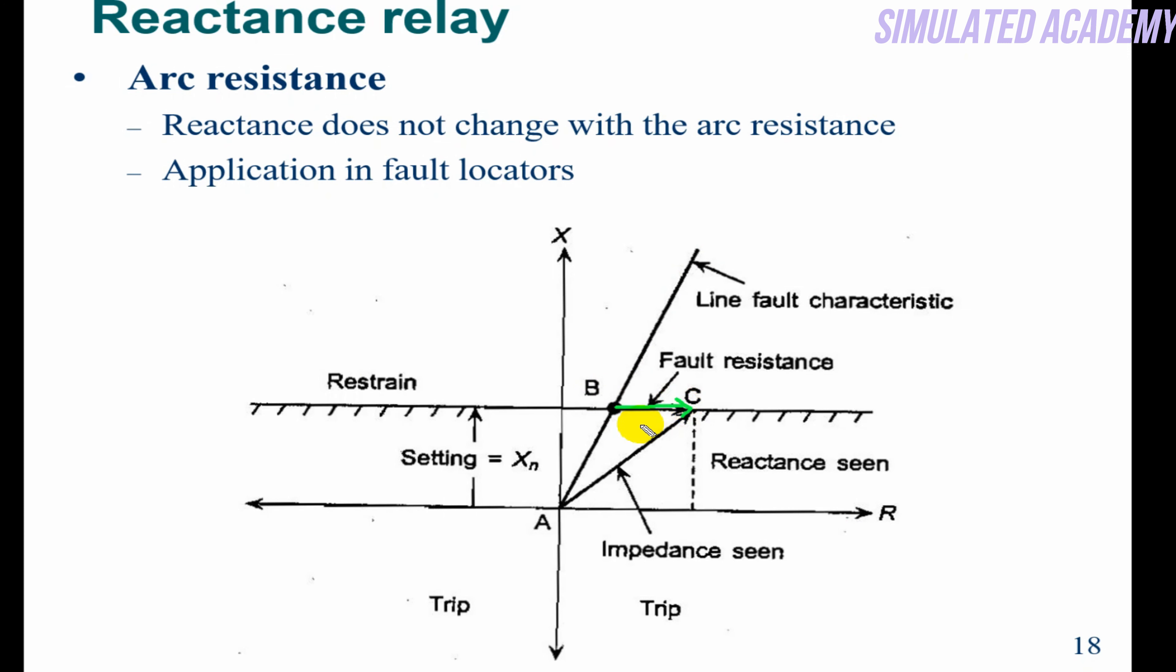If arc occurs, because of the arc it will shift this way. So what does this mean? This means that reactance doesn't change with arc resistance. Arc resistance is the real part, so it changes this way; reactance changes this way.